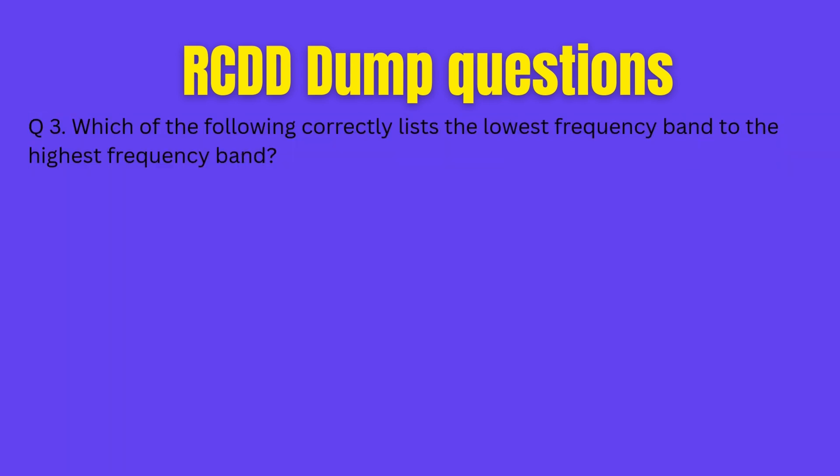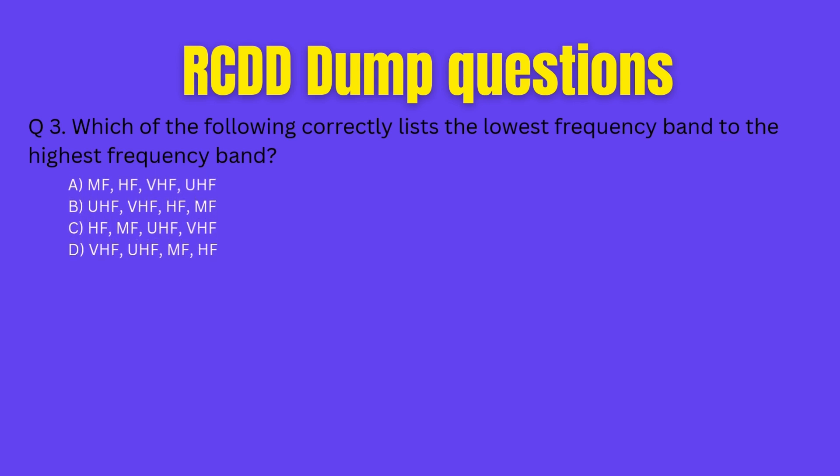Question 3. Which of the following correctly lists the lowest frequency band to the highest frequency band? A. MF, HF, VHF, UHF. B. UHF, VHF, HF, MF. C. HF, MF, UHF, VHF. D. VHF, UHF, MF, HF. Alright, lock in your answer, you've got about 20 seconds.